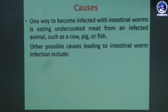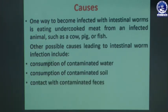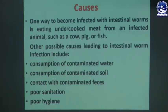Other possible causes include consumption of contaminated water, contaminated soil, and contact with contaminated areas with poor sanitation and hygiene. When we take impure drinking water, impure or half-cooked food, or have direct contact with soil infected by intestinal worms, there is also a risk of infection. Not maintaining proper hygienic and sanitized environments is a key cause.